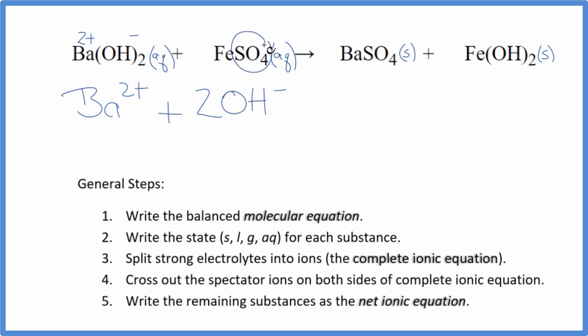This sulfate, that's going to be the whole thing, 2 minus. That's good to know. The iron, we don't know. But since this is 2 minus, it has to be 2 plus. So we'll have the iron 2 ion, that's Fe2 plus, plus we'll have the sulfate ion, SO4 2 minus. And these are the reactants in our net ionic equation.